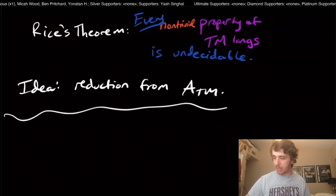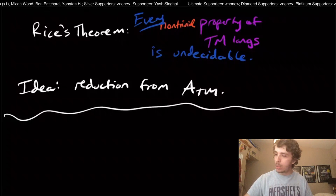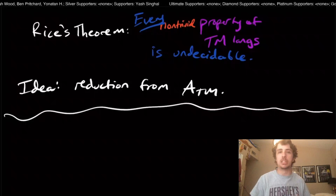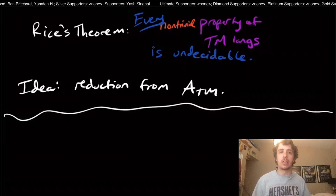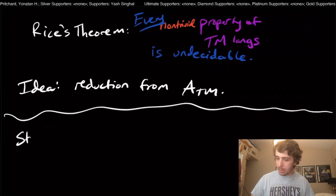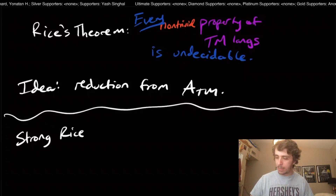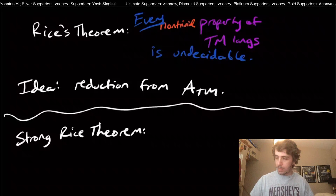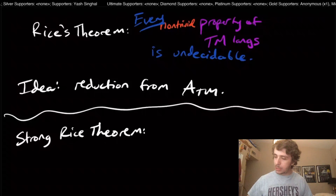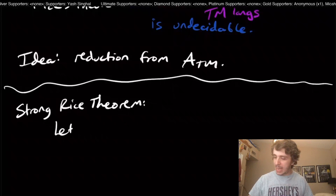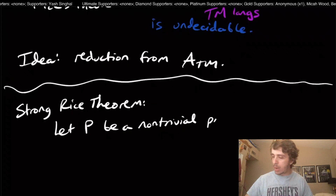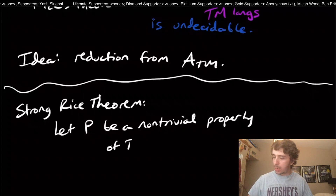We've done a video about this before, but I want to show you something really cool. Notice that Rice's theorem only says undecidable — it doesn't tell us whether the language is recognizable, or maybe not even recognizable, or whether its complement is recognizable either. So what I'm going to do is prove something called the Strong Rice's theorem. Here we let P be a non-trivial property of Turing machine languages — exactly the same idea as before.